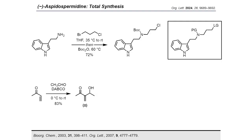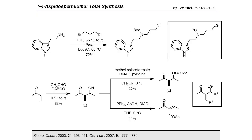Since the hydroxy group is a poor leaving group, this allylic alcohol is an unactivated allylic substrate, and would therefore require activation in the substitution reaction, for example by a Lewis acid additive. Since activated allylic substrates with good leaving groups, such as carbonates or acetates, are more commonly reported, we also prepared the corresponding allylic methyl carbonate and the regioisomeric allylic acetate, the latter of which was obtained by an SN2' Mitsunobu reaction using acetic acid as a pronucleophile.